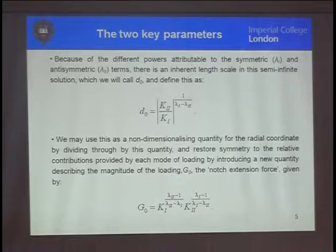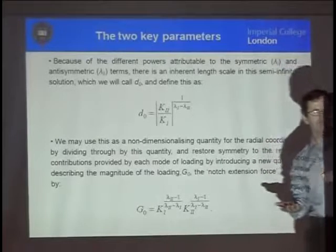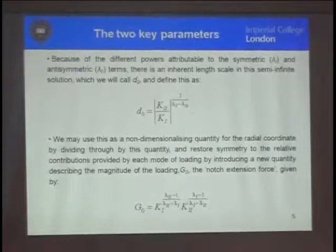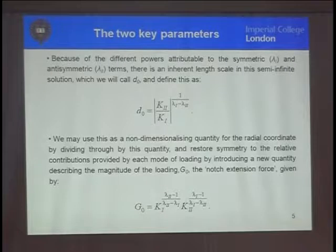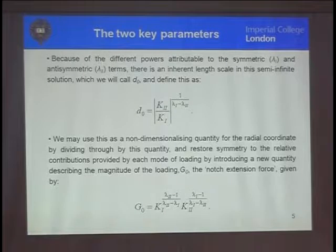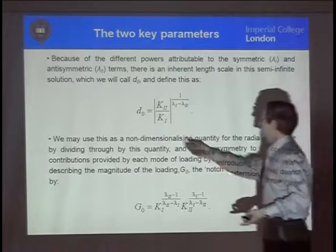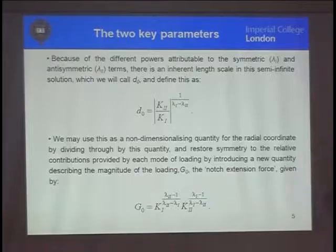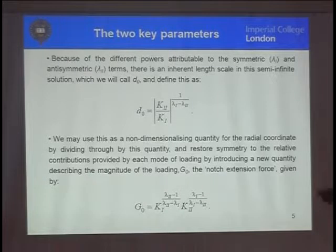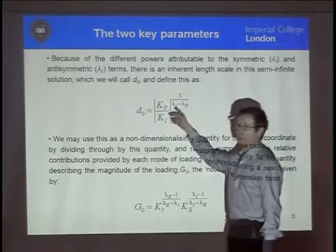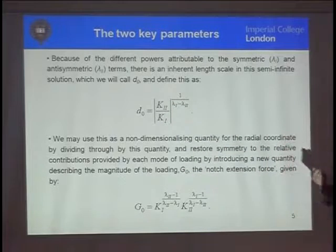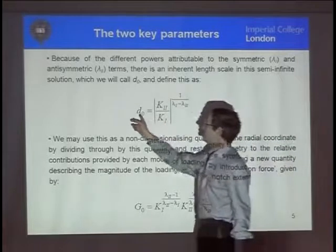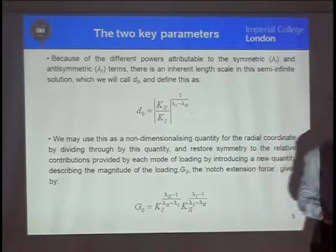Now, the reason that we want to do this is as follows. If this were a crack, then both eigenvalue solutions are singular to the same degree. And as Sylvie said this morning, it means that all points within the domain in which the singular solution controls what's going on see, as it were, the same effect, the same contributions from the mode 1 and the mode 2 solutions. So K₂ over K₁ is a dimensionless number. It's not a dimensionless number for any notch which is not a crack. But, by raising it to this power here, and don't forget λ₁ and λ₂ are known values from the eigenvalue problem from William's solution, we can get this number here, D₀, which has dimensions of length.